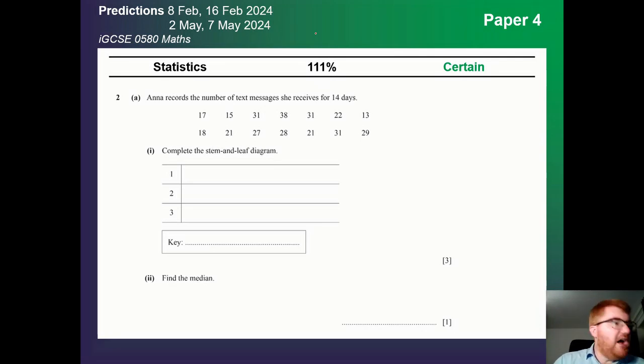On to statistics. Another topic which appears on both papers quite often. And here we are. A stem and leaf diagram. I mentioned it again. It does come up often. But be aware you could have box plots. That's also a key topic. As is histograms. Cumulative frequency less so in the last year or so. But you need to know how to plot these and interpret them.